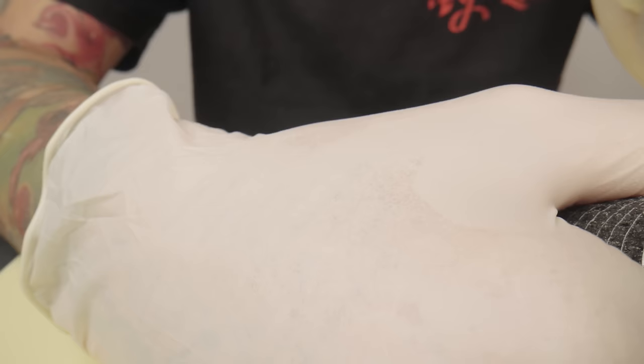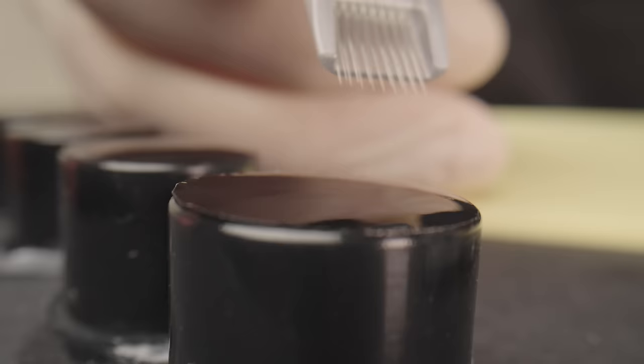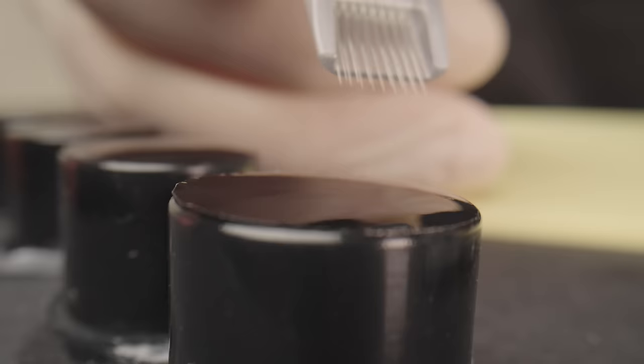Apply Vaseline to the back of your hand for easy access during the tattooing process. This is especially important if the client has very dry skin, since excess ink might not wipe off easily.